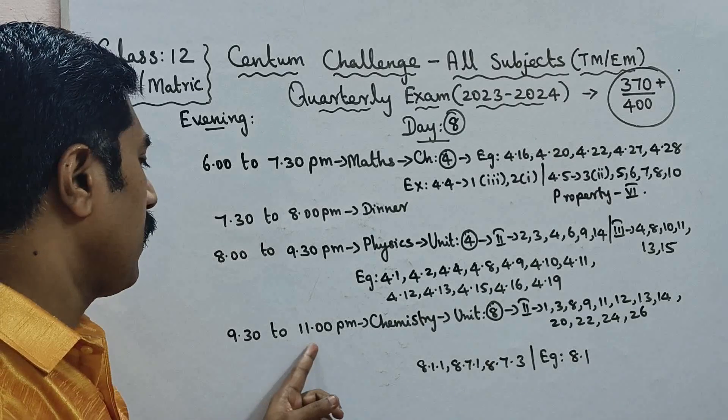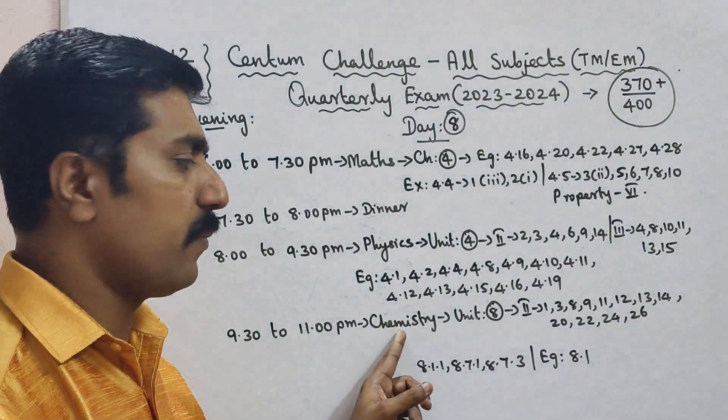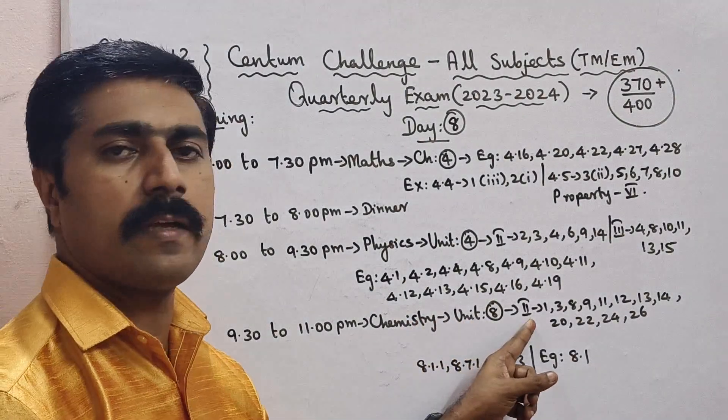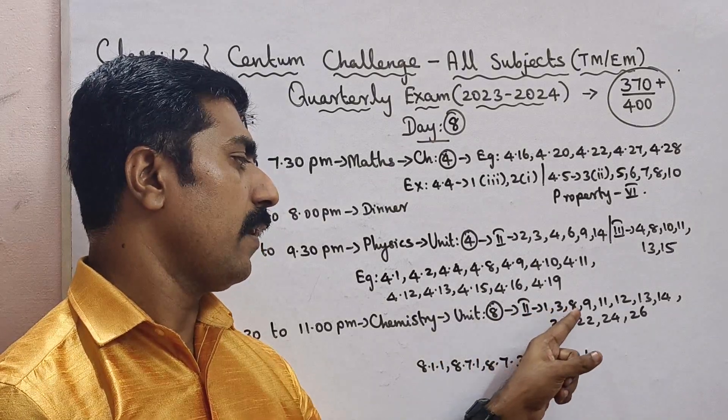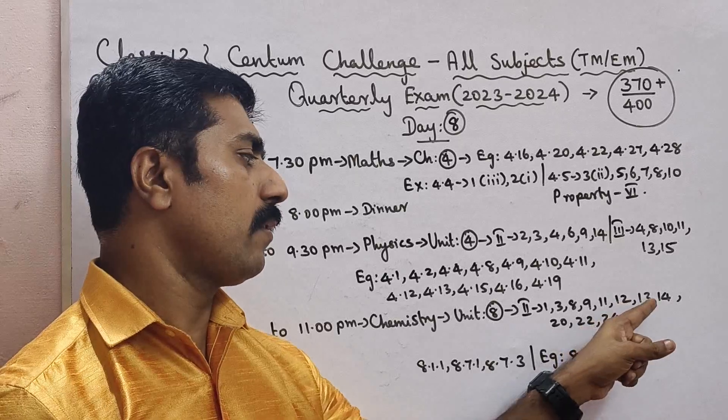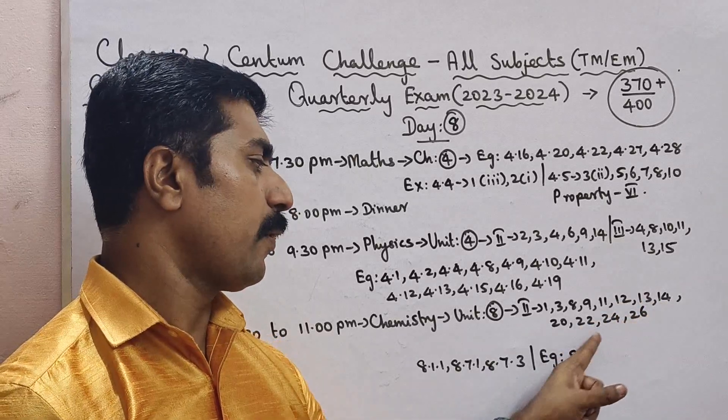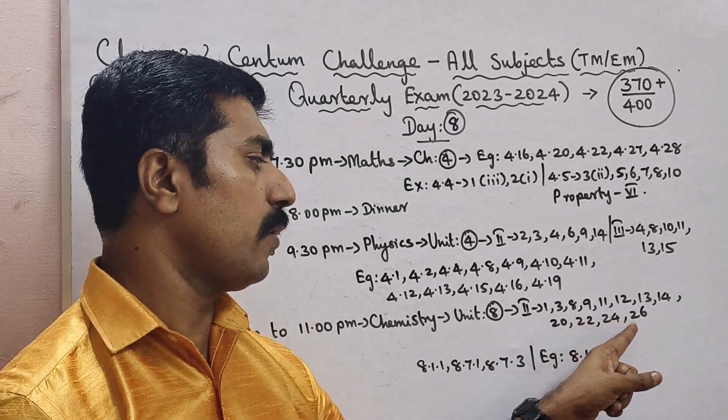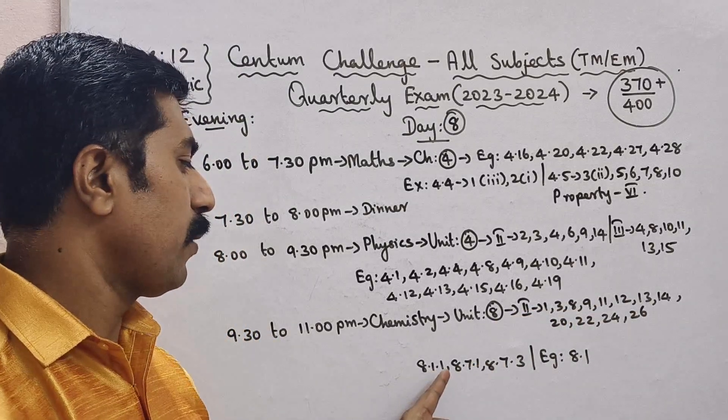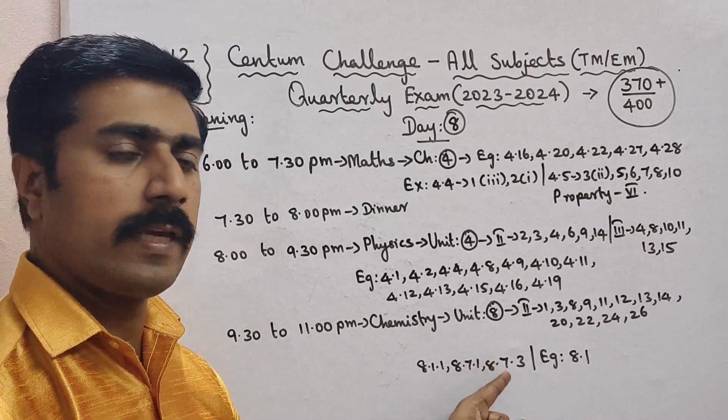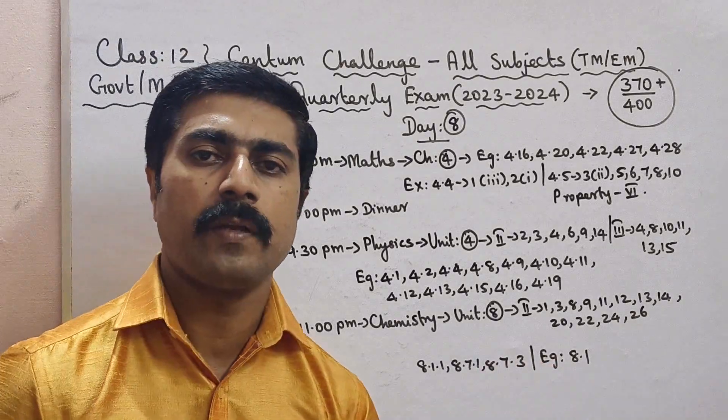Next is 9:30 to 11 pm, one and a half hours chemistry Unit 8 book back. Roman numeral 2 short answers questions 1, 3, 8, 9, 11, 12, 13, 14, 20, 22, 24, 26. Inside topics 8.1.1, 8.7.1, 8.7.3.